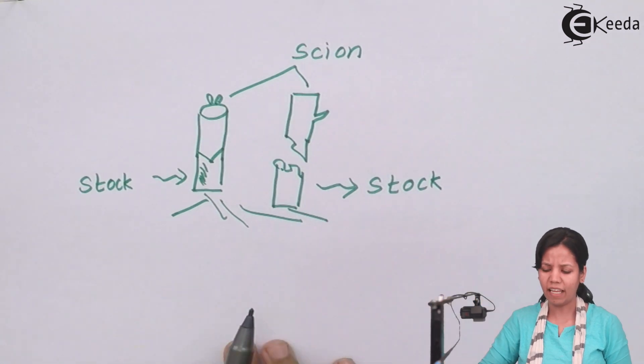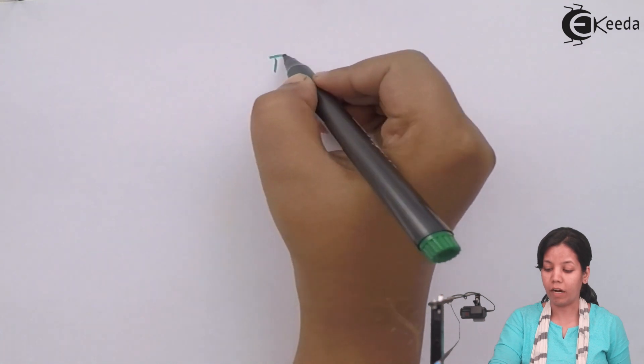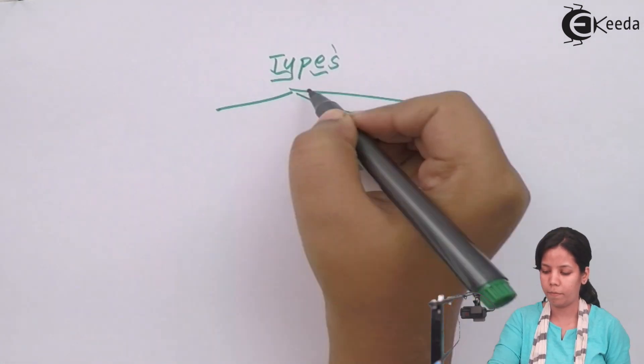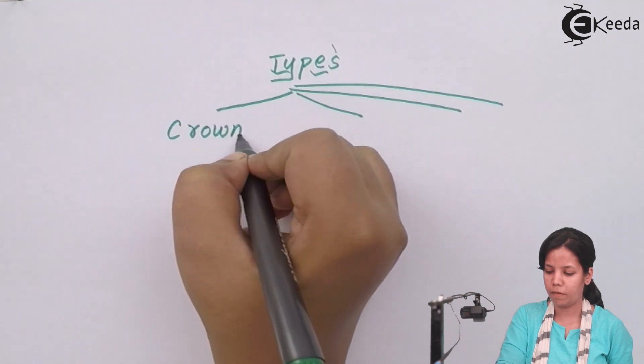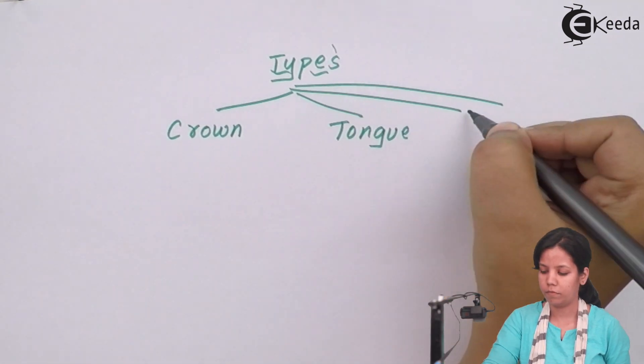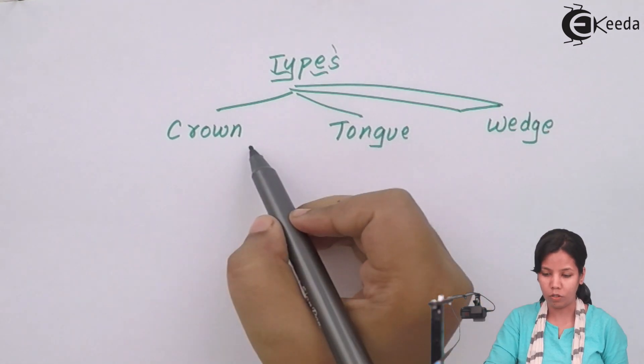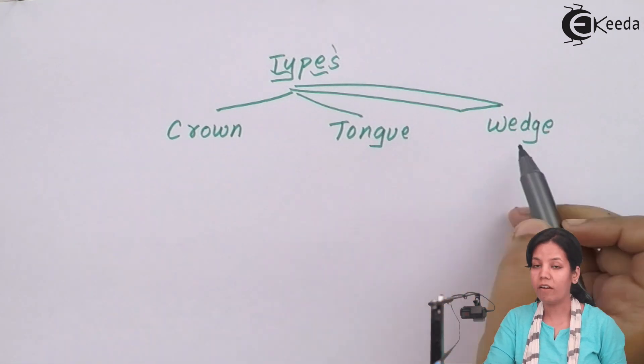Now grafting can be of three different types. The types of grafting are crown grafting, tongue grafting, and wedge grafting.